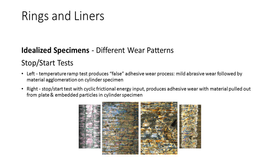Different test procedures can generate very different wear mechanisms. In this example, a temperature ramp test produces what one might term a false adhesive wear process — this is, in fact, mild abrasive wear followed by material agglomeration on the cylinder specimen. A stop-start test using identical specimens and lubricant, with the temperature gradient the right way round and cyclic frictional energy input, produces adhesive wear with material pulled out of the plate surface and embedded in the cylinder specimen.